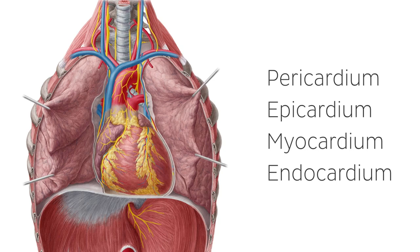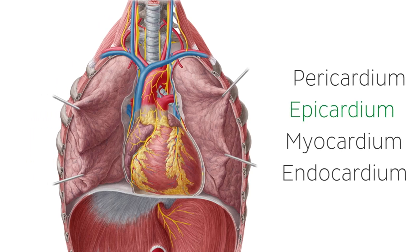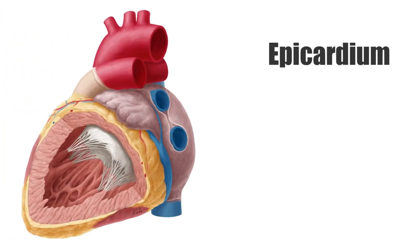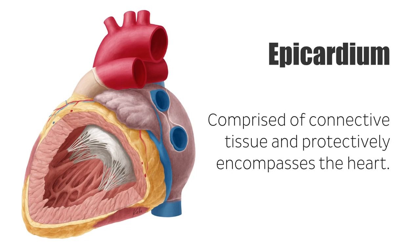The aim of this tutorial is to highlight the epicardium. The epicardium is the layer of muscle found covering the external surfaces of the heart. It is comprised mainly of connective tissue and protectively encompasses the heart. The epicardium is directly fused with the myocardium internally and is in contact with the serous layer of the pericardium.